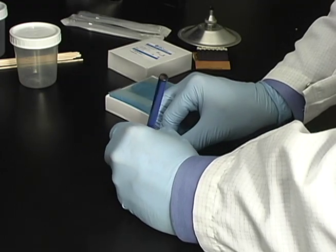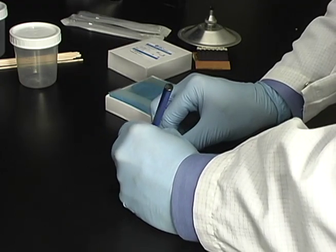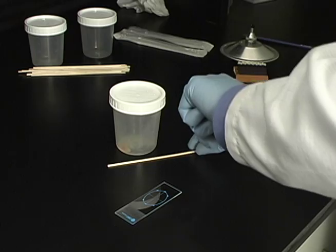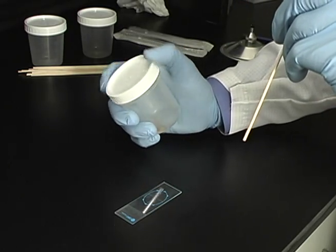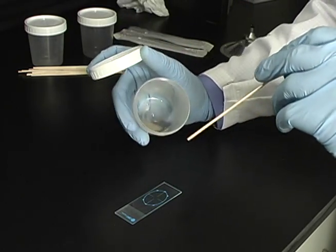Properly label the slide with the patient ID number, as dictated by your laboratory protocol. Once the pulmonary sample has been collected, use a wooden applicator stick to remove a small portion of the mucoid specimen.